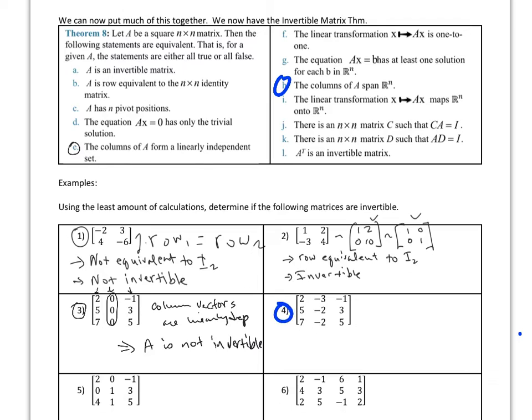What about this one? What do you notice? If I take column one plus column two, what happens? If I do column one vector plus column two vector, I get column three. So we are linearly dependent again. If we're linearly dependent, then A is not invertible.